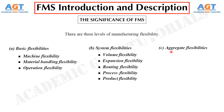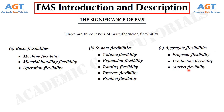And level number 3 – Aggregate flexibilities. This level of flexibility includes program flexibility, which is the ability of a system to run for reasonably long periods without external intervention; production flexibility, which is the volume of the set of part types that a system can produce without major investment in capital equipment; and market flexibility, which is the ability of a system to efficiently adapt to changing market conditions.